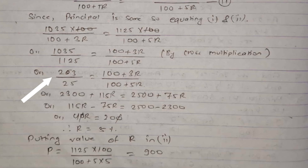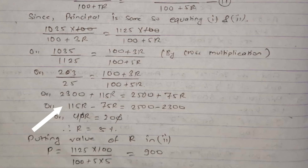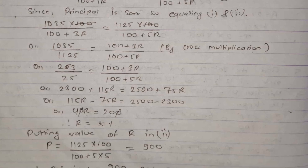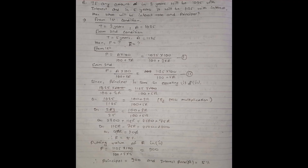Cross-multiplying: 23 × (100 + 5r) = 25 × (100 + 3r), giving 2300 + 115r = 2500 + 75r. Rearranging: 115r − 75r = 2500 − 2300, so 40r = 200, therefore r = 5. The rate of interest is 5%. Substituting r = 5 into equation 2: P = 1125 × 100 / (100 + 5 × 5) = 1125 × 100 / 125 = 900. Therefore the principal amount is 900 and the interest rate is 5%.